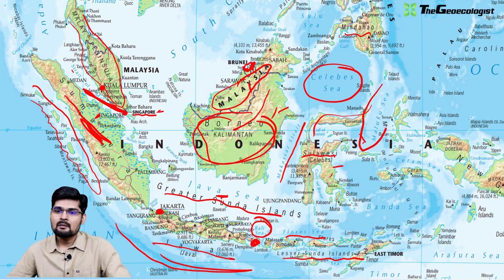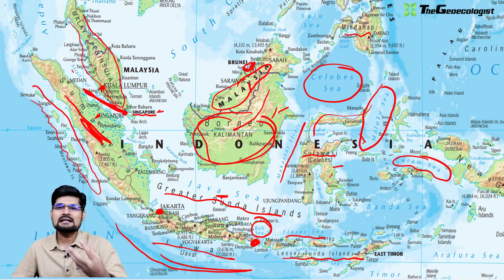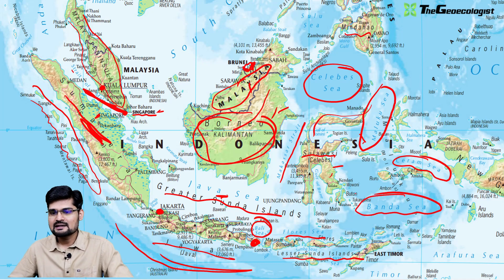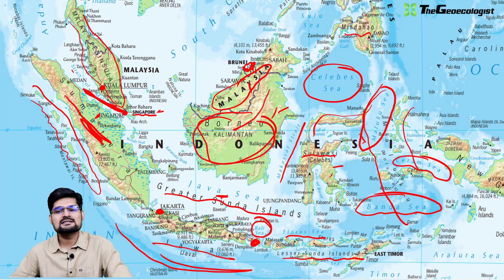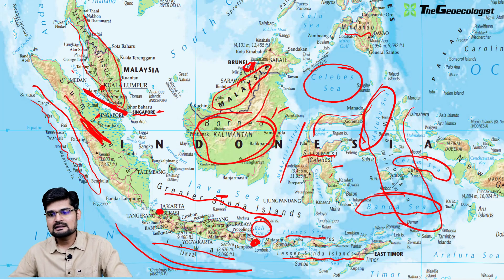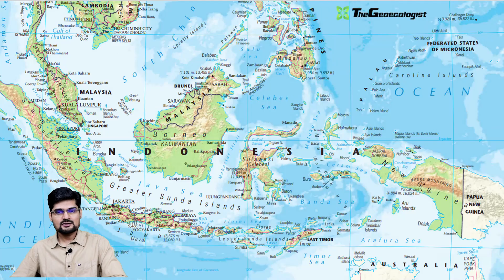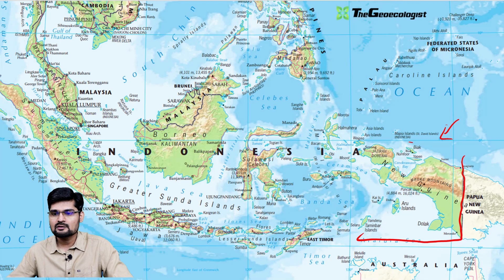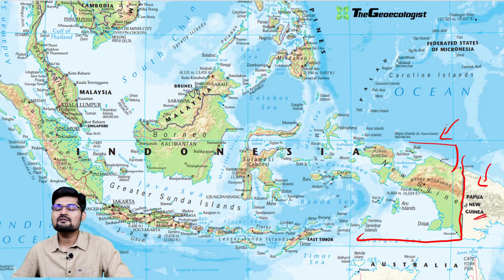Going further east, this is the Maluku Sea, then the Seram Sea — all these small inland seas are important. Then you have the major Banda Sea, and this region is also called the Maluku region. It connects with New Guinea. The Indonesian jurisdiction ends here, and this is where the Pacific area begins — that is Papua New Guinea, which we'll be talking about in the next lecture.